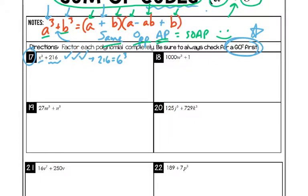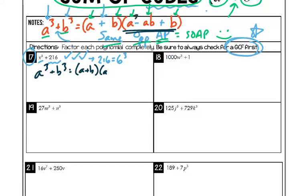Actually, I need to fix the formula — in the second parentheses, the a needs to be a² and the b needs to be b². So the correct formula is: a³ + b³ = (a + b)(a² − ab + b²). Because when the a on the front and the a² multiply together, that's how you get a³. So the corrected formula is (a + b)(a² − ab + b²).